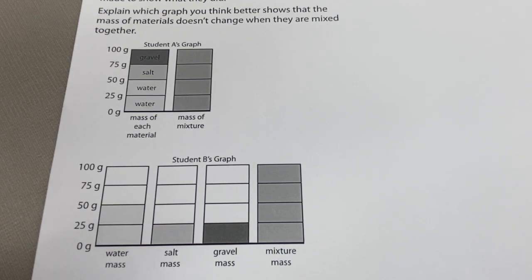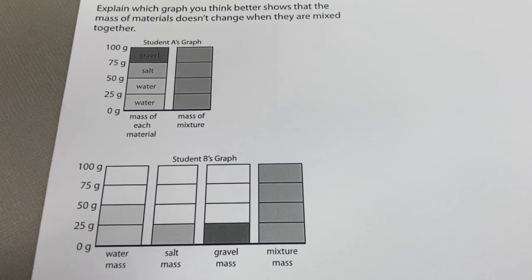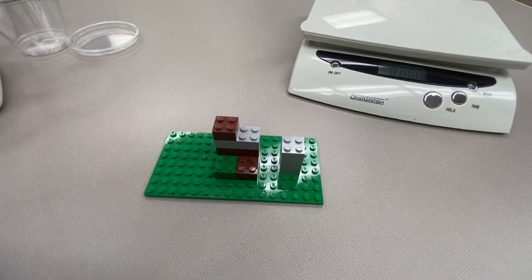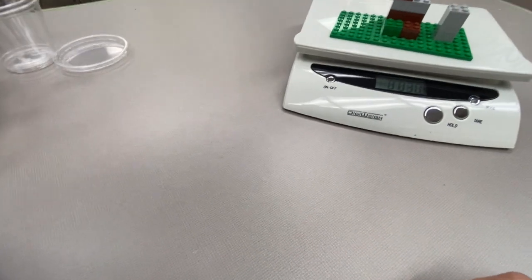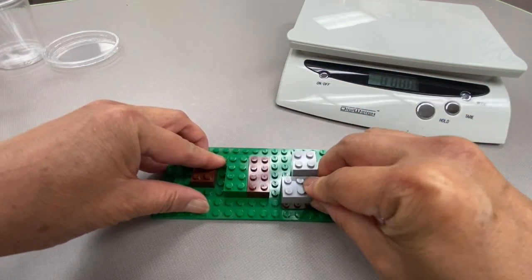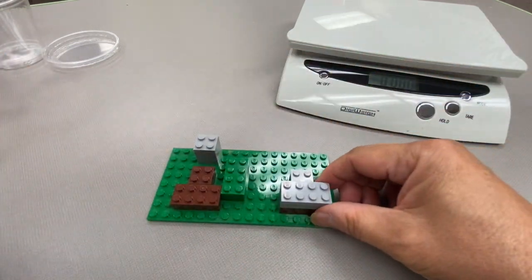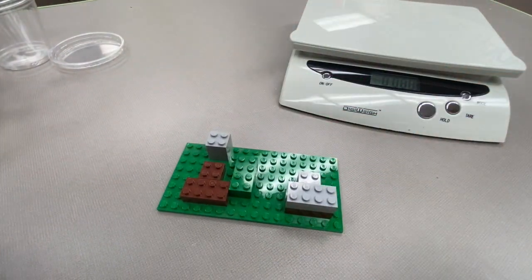If you understand the law of conservation of mass — the law states that matter cannot be created or destroyed in a chemical reaction. So if we weigh all of the reactants before a chemical reaction, the weight after the reaction will be the same even if the products are different. Let's take these Legos for example. If I weigh them, they come out to 30 grams. If I rearrange them, they will still weigh 30 grams, because like a chemical reaction, I did not create or destroy any Legos.